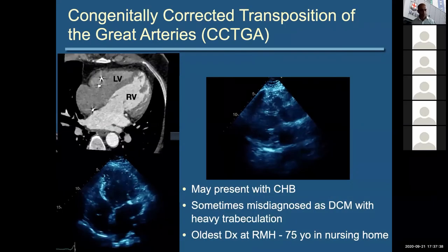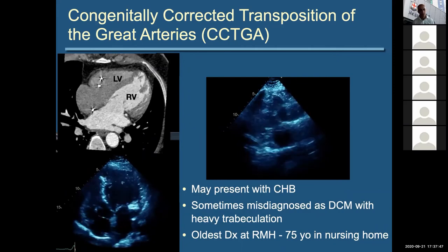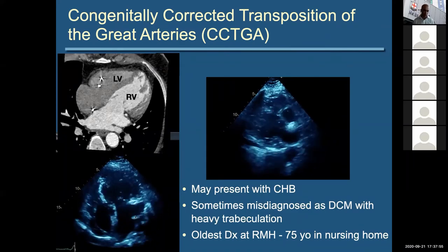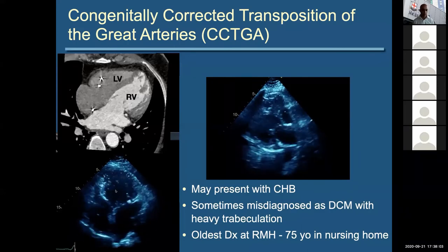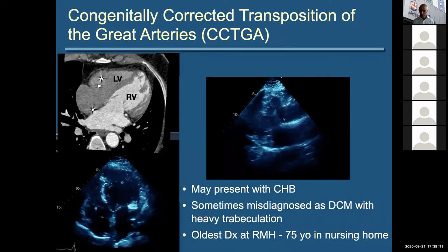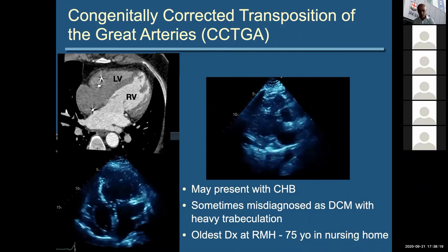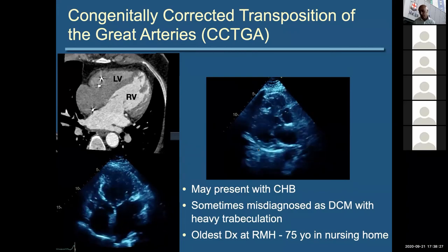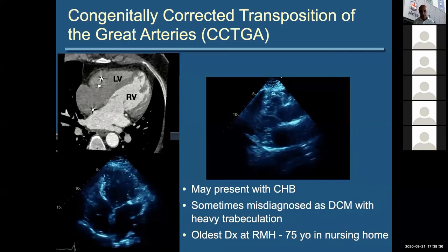Here's a patient with CCTGA in her 50s who's never had anything repaired. She came to attention because of complete heart block, and you can see the pacing leads sitting in the subpulmonic ventricle. You can see how this can be missed — the four-chamber echo doesn't look wildly abnormal, but this is actually a morphologic right ventricle and this is a morphologic left ventricle. In the parasternal long axis view, you could actually get fooled. There's no actual connection visible, as it goes to the morphologic RV and exits anteriorly. Often missed — in fact, the oldest patient we've diagnosed with CCTGA at the Royal Melbourne was a 75-year-old lady in a nursing home. They don't always do fine; they often develop complications such as heart failure at a younger age.